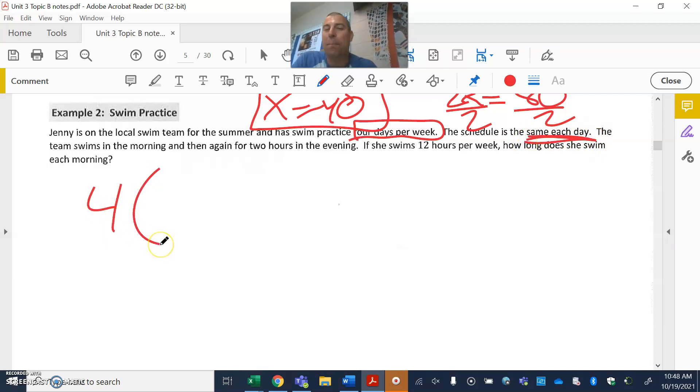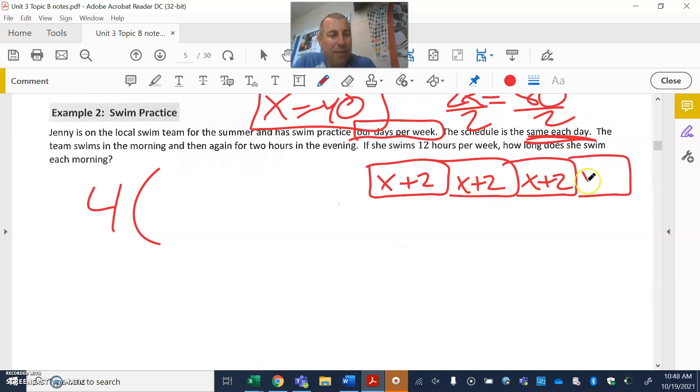This is something where we want to start to realize our distributive property, because it's four days per week and each day is the same. That tells me I can just multiply it by four because it is going to repeat. I've got swims in the morning, I don't know, and then again two hours in the evening. She's doing that four times.